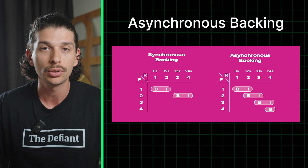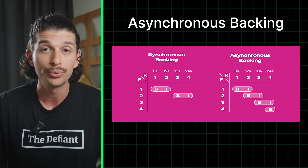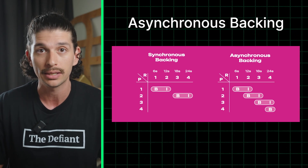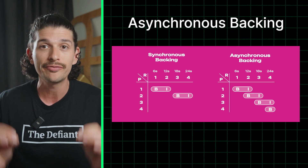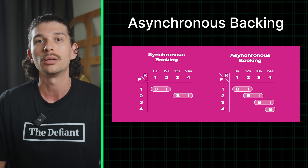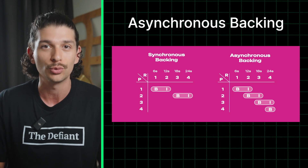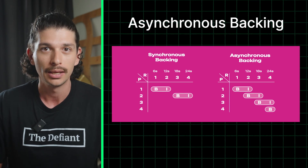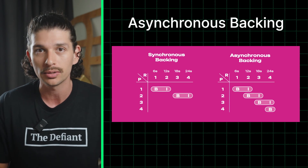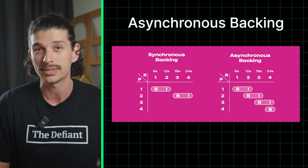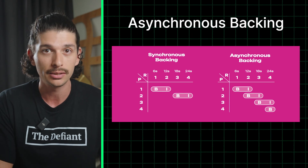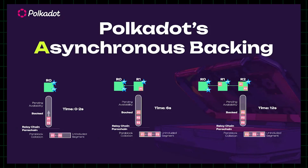In May, Polkadot's fellowship approved the implementation of asynchronous backing, which is the very first step towards a series of upgrades that will culminate in Polkadot 2.0. Asynchronous backing cuts the block time by 50%, reducing it from 12 seconds to about 6 seconds.